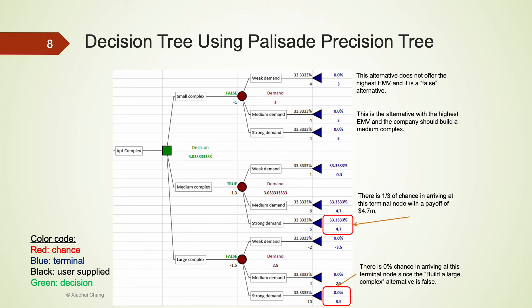You may also see a bunch of probabilities and numbers shown up on the very right side of the tree, all marked in blue. These numbers represent the likelihoods of arriving at each terminal node with their corresponding EMV.